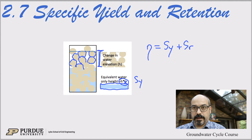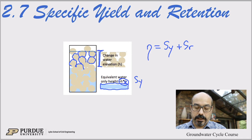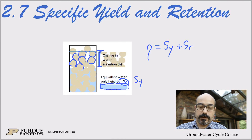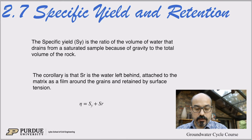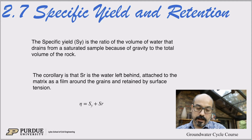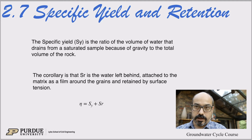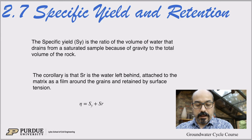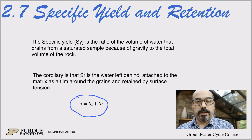In other words, the porosity itself is Sy plus the specific retention. So you can split the porosity between the water that readily flows out by gravity and the water that is retained in the soil formation. Specific yield is the ratio of the volume of water that drains from a saturated sample due to gravity to the total volume of the rock — it's a percentage, just like porosity.